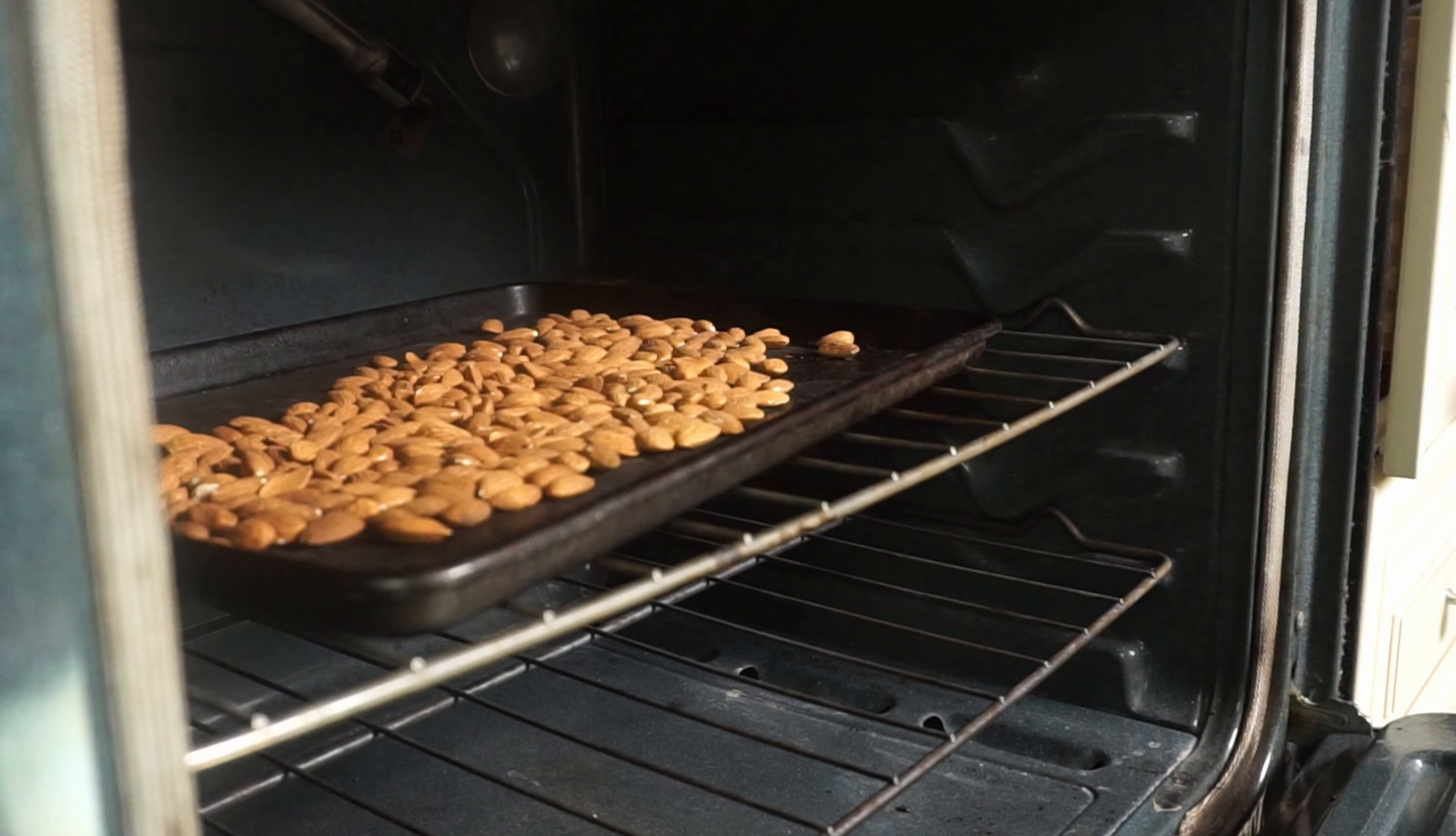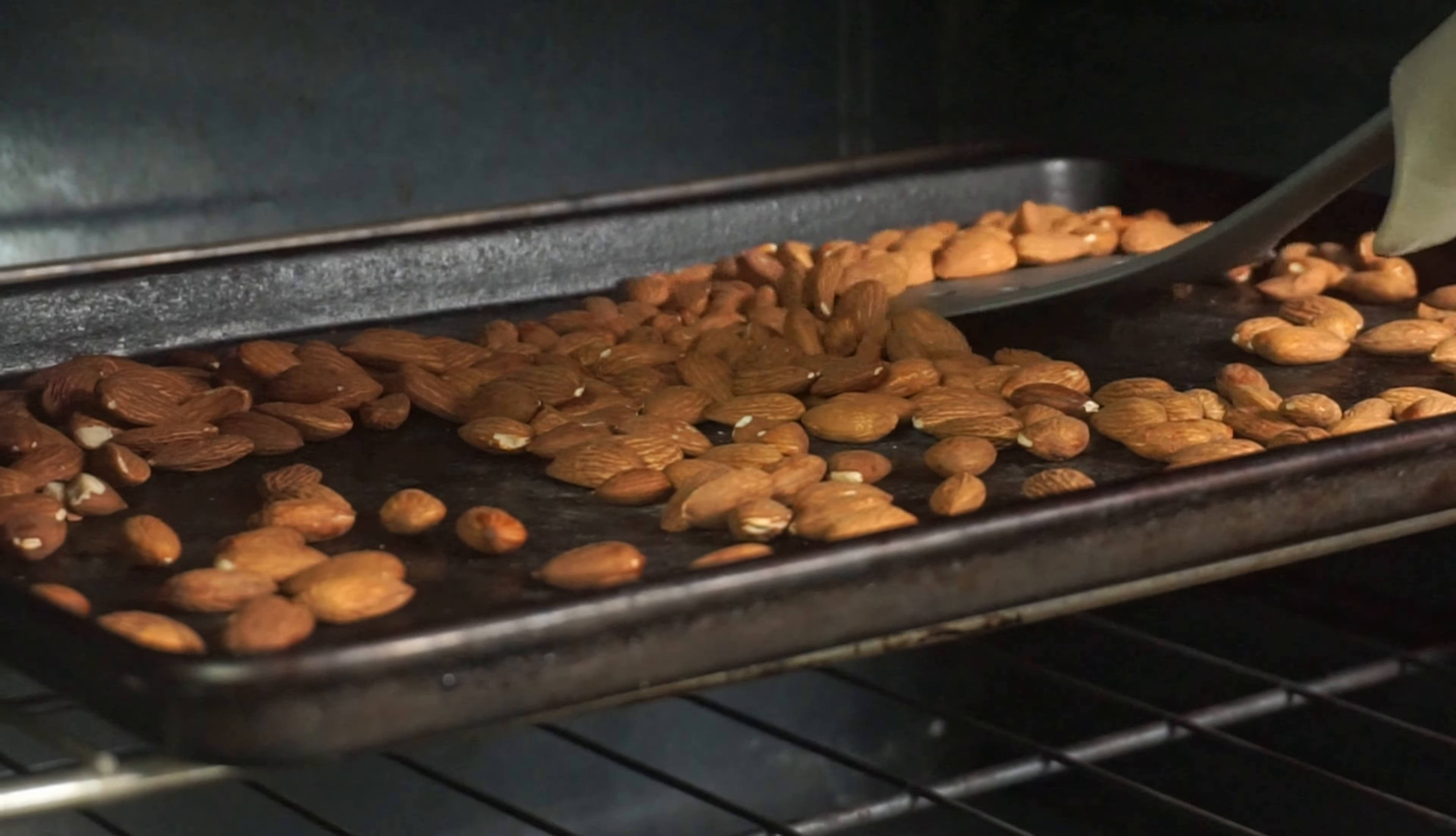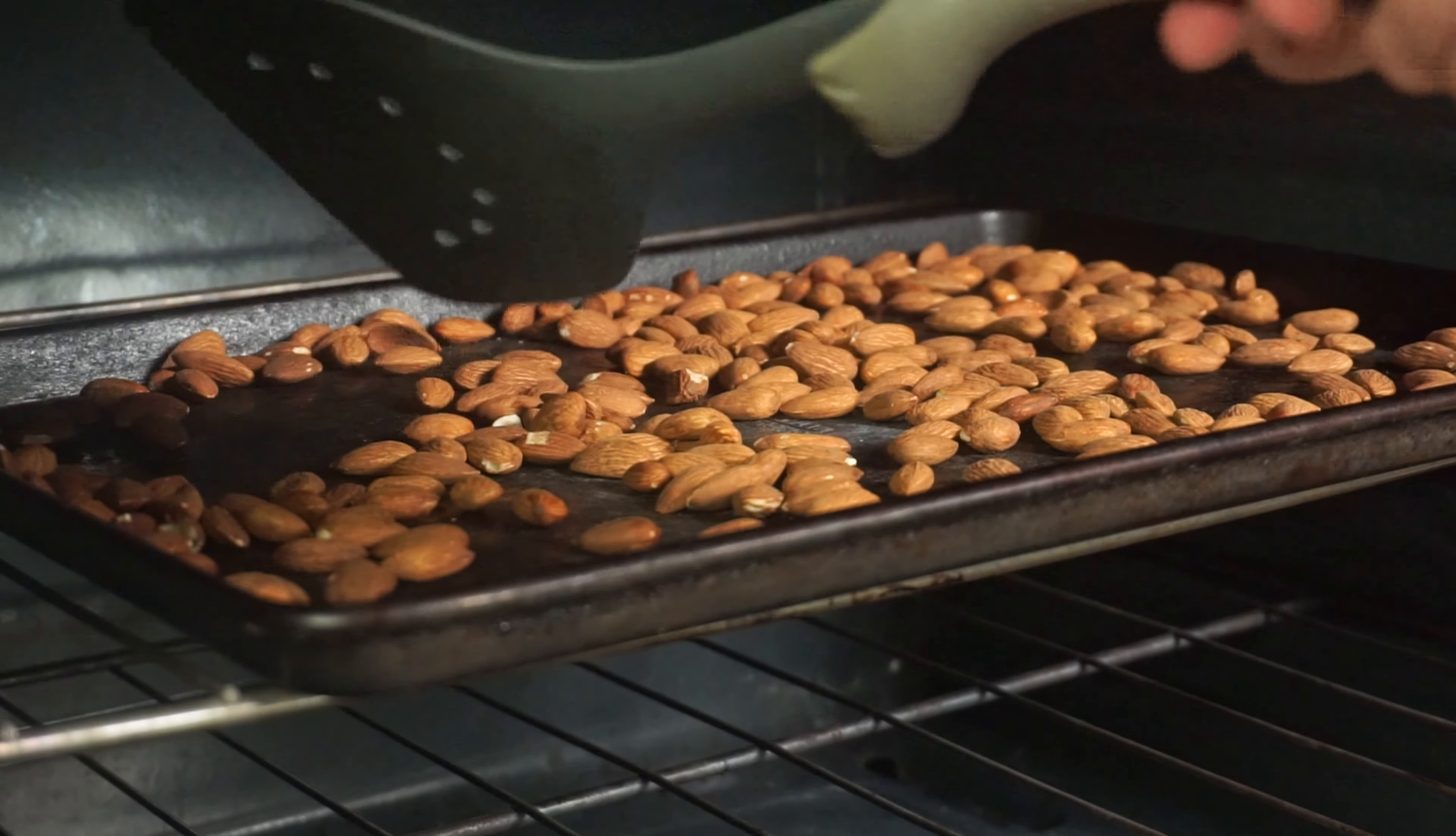Preheat your oven to 350 degrees Fahrenheit. Spread three cups of almonds across a large, rimmed baking sheet and toast your almonds for 10 minutes.